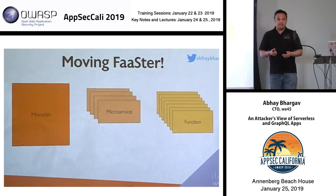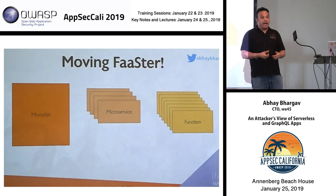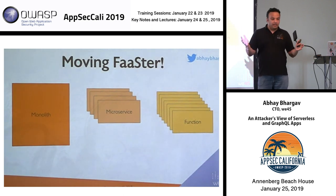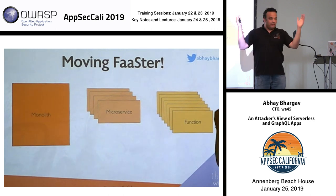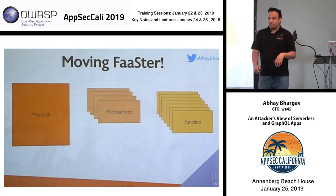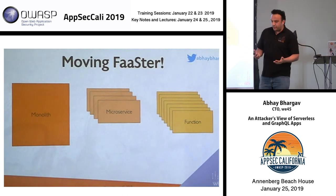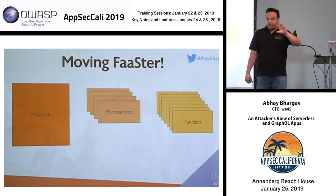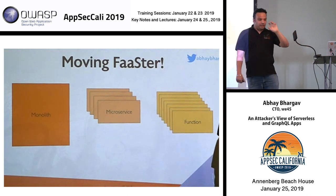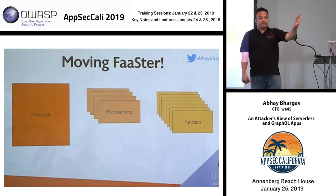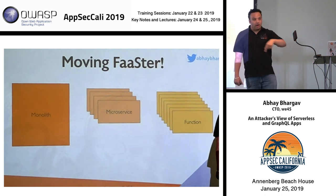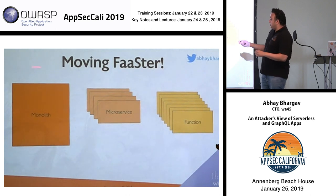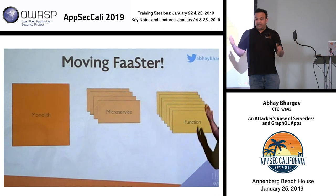Functions as a service is essentially us trying to move faster. We had monoliths — massive applications with a ton of features — then realized they were hellish to maintain. So we moved to microservices: smaller, independent, discrete services like user management, billing, payment, and purchases. These talk to each other through message queues. Then we realized: why not make this an even smaller unit of compute? So that's where functions as a service came from.